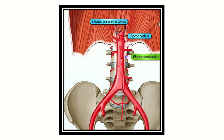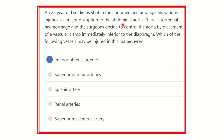Here we can see the celiac axis, which lies a little bit below, but the inferior phrenic artery lies just below the diaphragm. So the inferior phrenic artery may be damaged during this procedure. The inferior phrenic artery is the most superior branch of the abdominal aorta and is immediately inferior to the diaphragm, so during placement of the vascular clamp, this inferior phrenic artery may be injured.